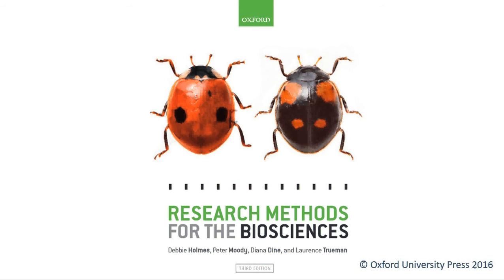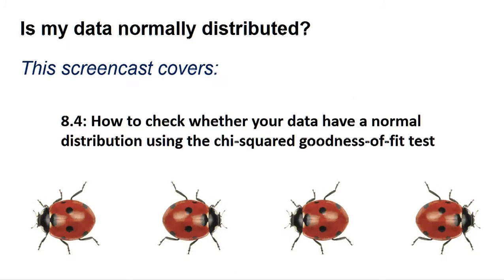Hello, welcome to another Research Methods for the Biosciences screencast for R. This screencast gives you some advice on judging if your data is normally distributed and includes section 8.4, how to check whether your data have a normal distribution using the chi-squared goodness-of-fit test.